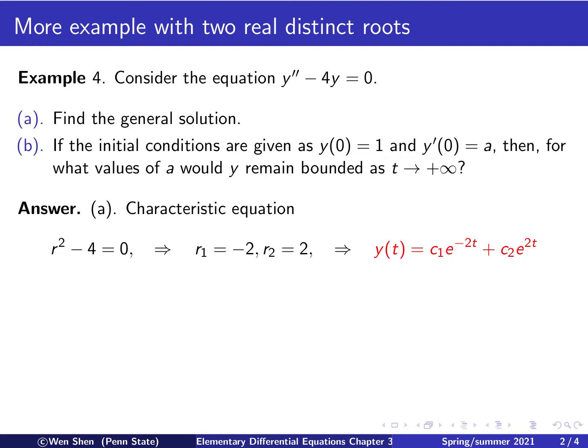So we can write up the general solution. Here, c1 times e to the r1t and c2 times e to the r2t and putting the values for r1 and r2. And here, c1 and c2 are arbitrary constants, which would be determined with the initial conditions.